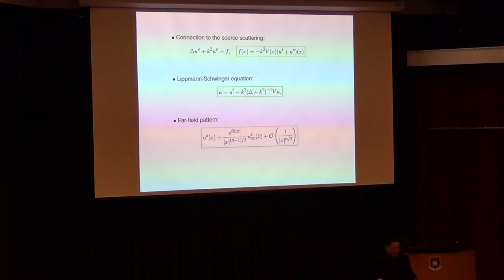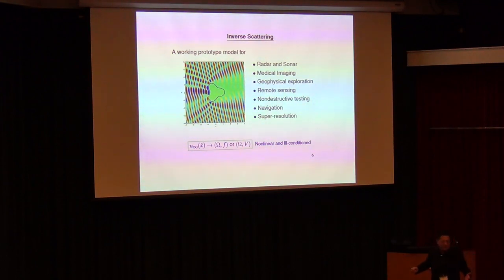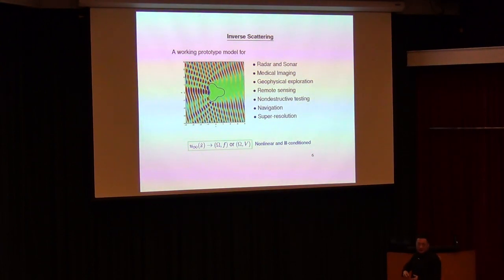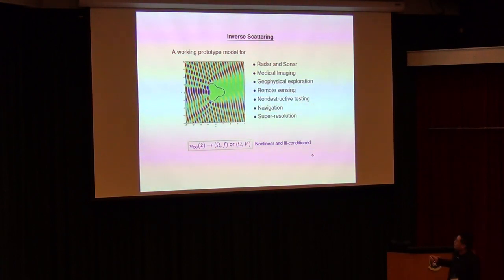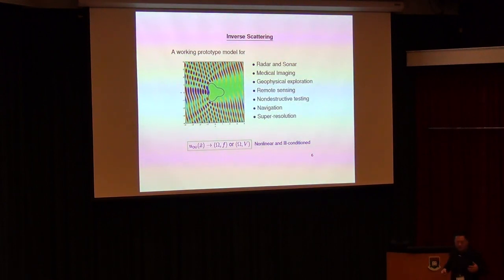This far-field pattern is defined over the unit sphere — it's a very simple function. The inverse scattering problem is: given this far-field pattern, determine the source or the medium. This is a nonlinear problem, even though the forward scattering problem is linear. You want to use a function defined on the unit sphere to recover a function or medium parameter defined over a bounded domain. This is a very common working prototype model for radar, sonar, medical imaging, geophysical exploration, and many other applications. But today I'm not going to talk about those — I'm going to talk about applications to machine learning and artificial intelligence.